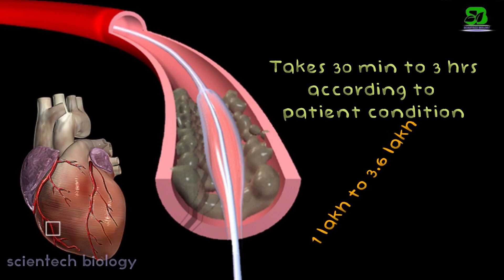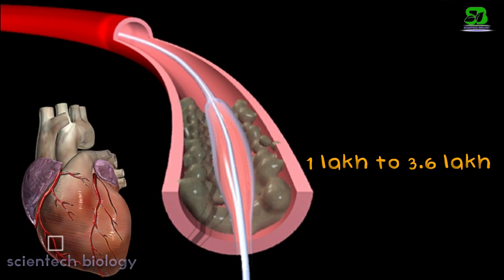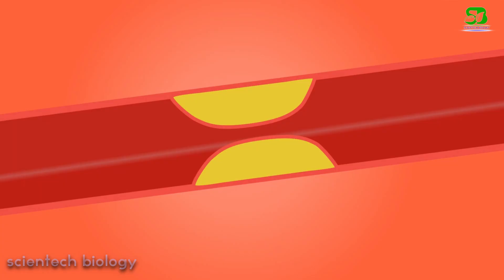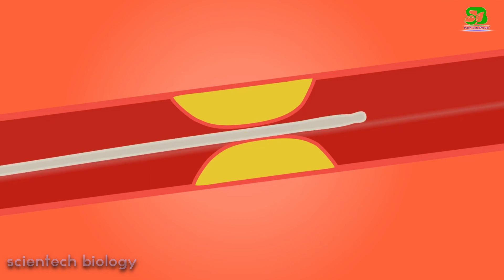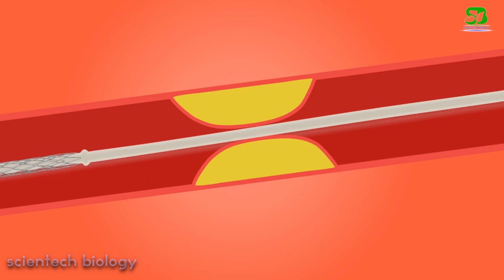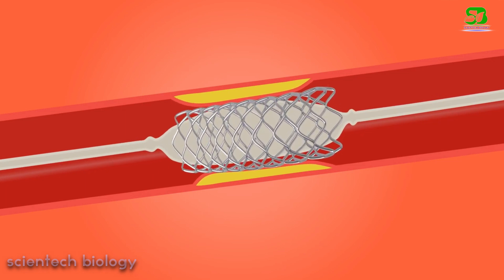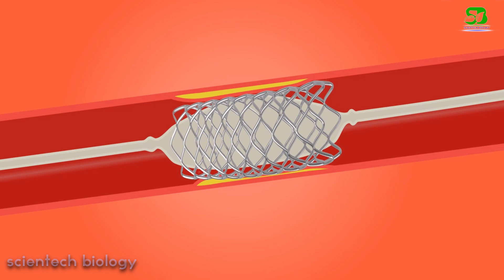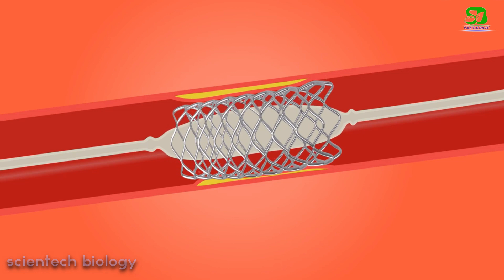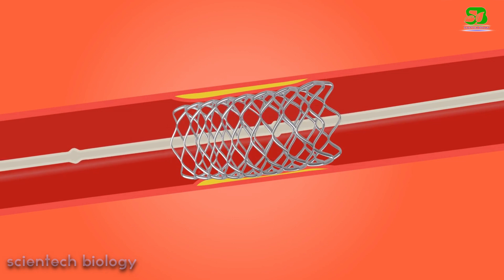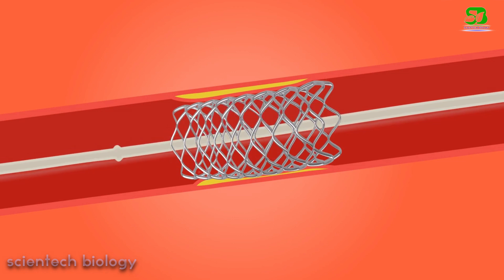The cost of this procedure may range from Rs 1 lakh to 3.6 lakh in India. Stents are small expandable mesh tubes that are inserted to keep a clogged artery open after a balloon angioplasty procedure. The stent is inserted during or immediately after balloon angioplasty, which prevents the artery from closing up again.